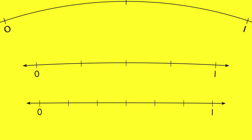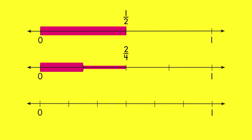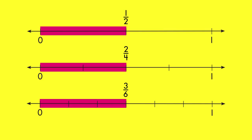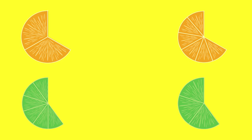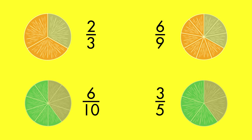You can see these same equivalent fractions on number lines. One-half, two-fourths, and three-sixths all name the same part of the number lines. They describe equal parts of the same whole. Look at more equivalent fractions. Even though the fruit slices are cut in different ways, the fractions name equal parts.